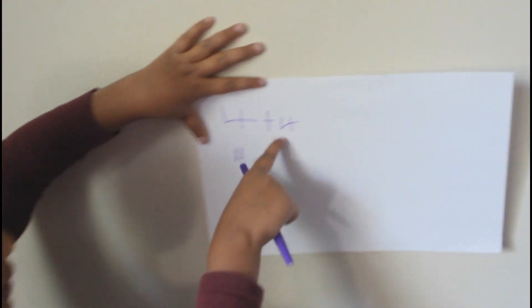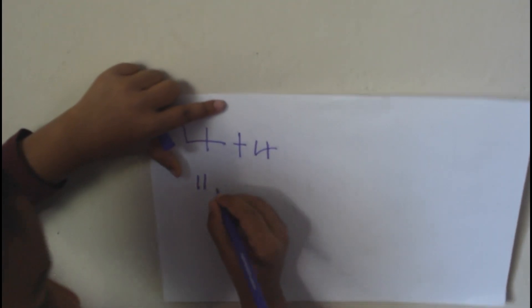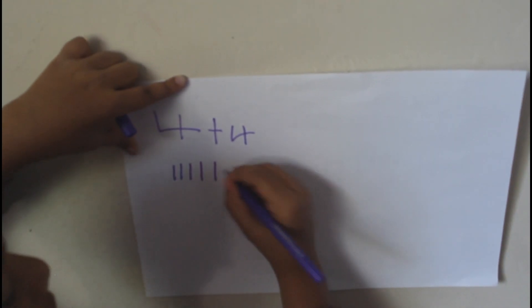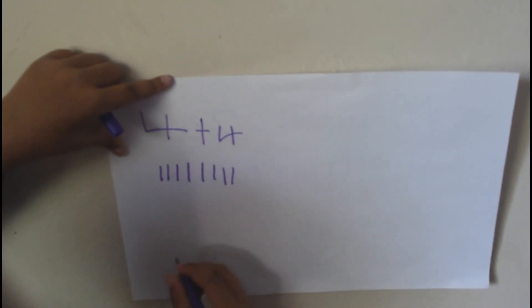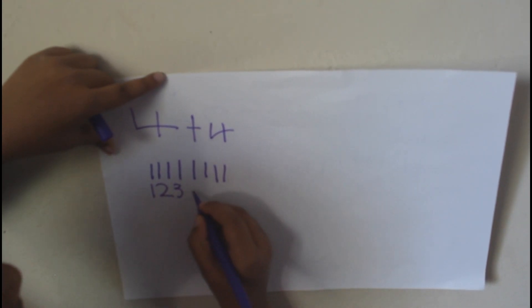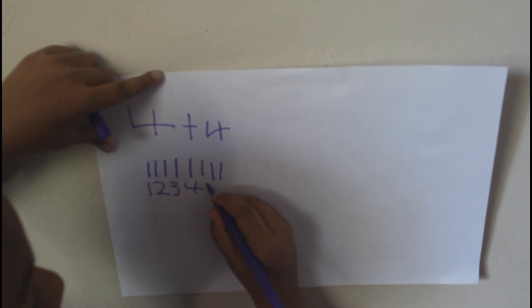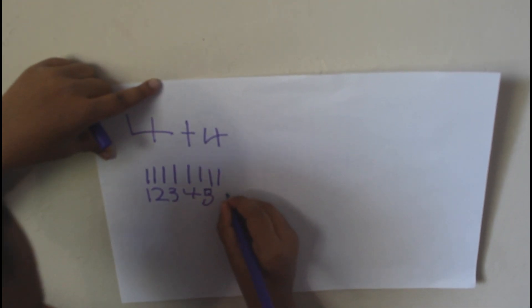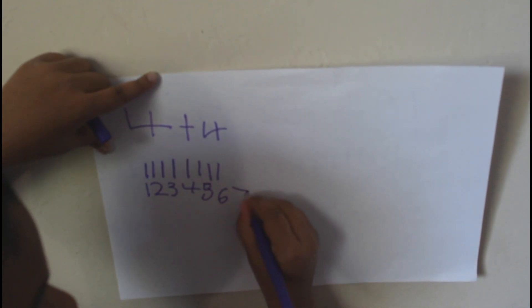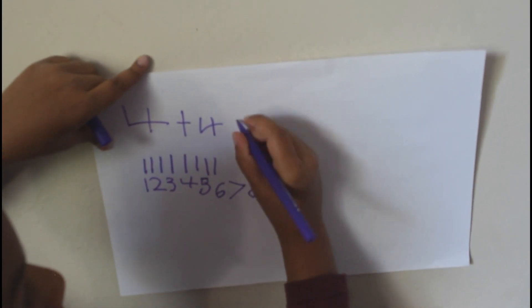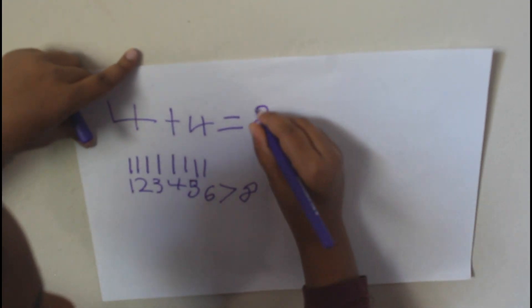Four plus four. We'll make four lines. Four and four more. What is that? One, two, three, four, five, six, seven, eight. The answer is eight.